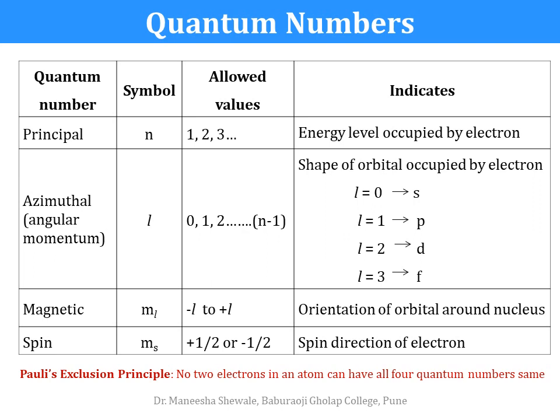For each electron in an atom, there is a set of 4 quantum numbers. And by Pauli's exclusion principle, no 2 electrons in an atom can have all 4 quantum numbers the same.